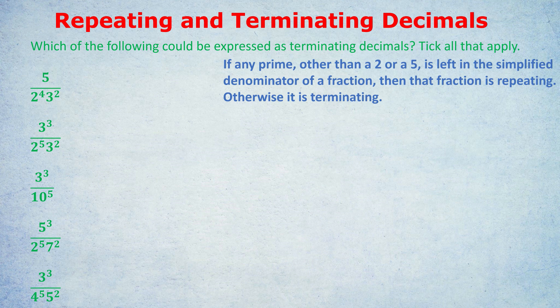The reason I wrote is left in a simplified denominator is because, of course, you have to simplify the fraction first. There might be an 11 in the denominator initially, and you might think, therefore, it's repeating. But then it gets cancelled out, and there are no 11s left or any other non-5 or non-2 prime, and therefore it's a terminating decimal. So you have to simplify first and then check which primes are left in the denominator. If it's only 2s and 5s, you're good to go. It's terminating. Any other prime, even just one of them, and no, it's a repeating decimal.